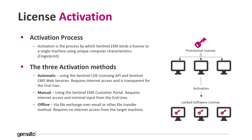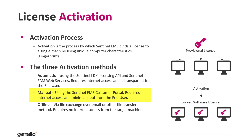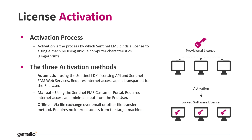There are three main activation methods available. The automatic one uses the LDK licensing API and the EMS web services — it requires internet access and is totally transparent to the end user. Then we have the manual one, which requires internet access to reach the EMS customer portal and requires minimal input from the user. We will focus on this one in this video. And the last one is the offline method, where activation happens by exchanging C2V and V2C files between the end user and the ISV — it does not require direct internet access.